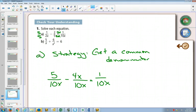Once you have all three of them with a common denominator, you can get rid of your fractions. Technically, you can get rid of all three of those because you could multiply both sides by 10x. And when you do that, all of your denominators will go away.